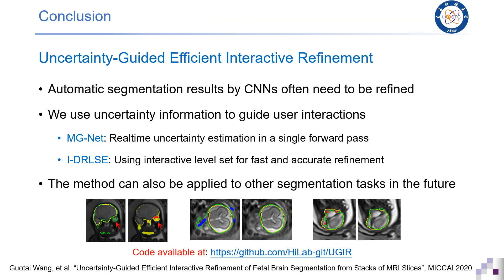In conclusion, because automatic segmentation results by CNNs often need to be refined, in order to improve the efficiency for refinement, we introduce an uncertainty-guided framework where the uncertainty information is used to guide user interactions. We have shown good results for fetal brain segmentation, and in the future the method can also be applied to other segmentation tasks. Thanks very much for your attention.